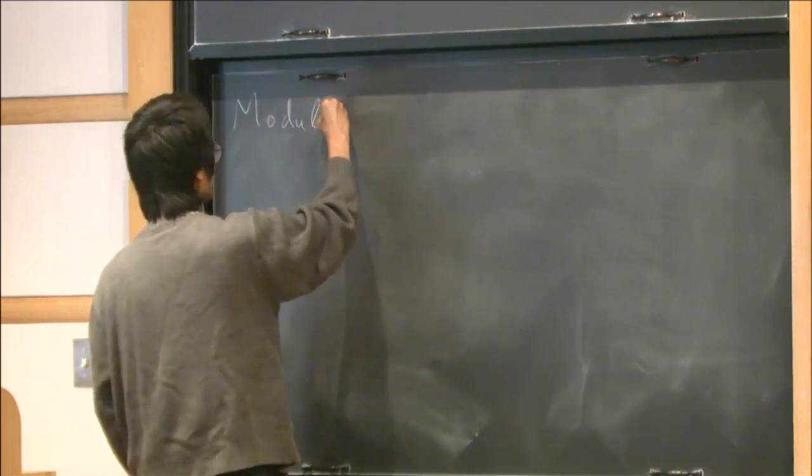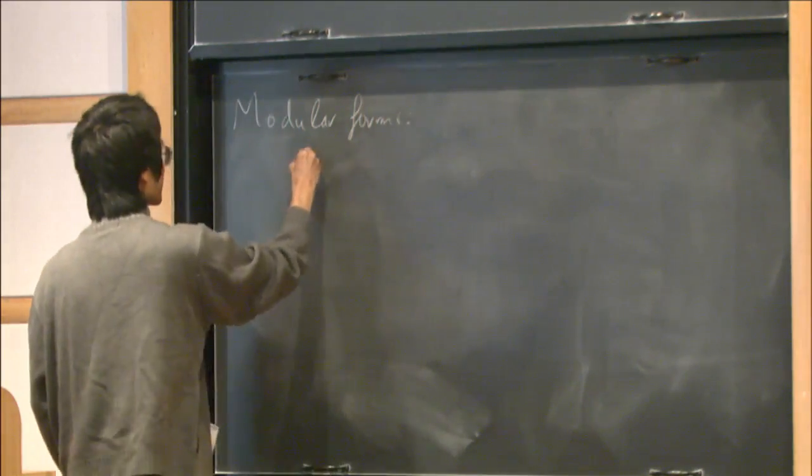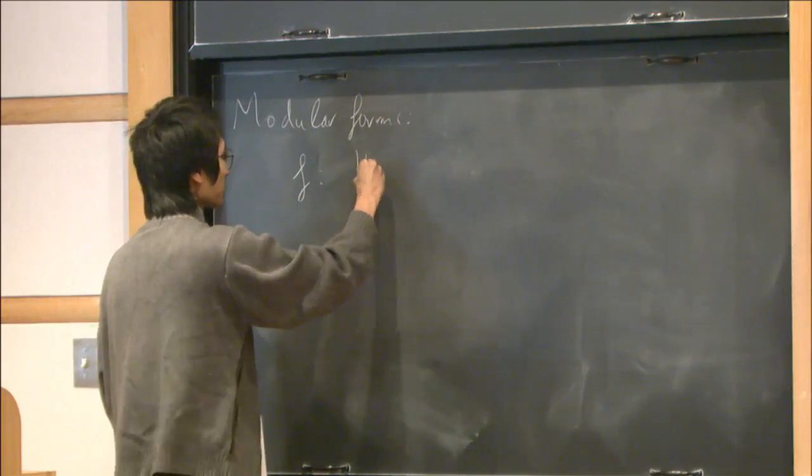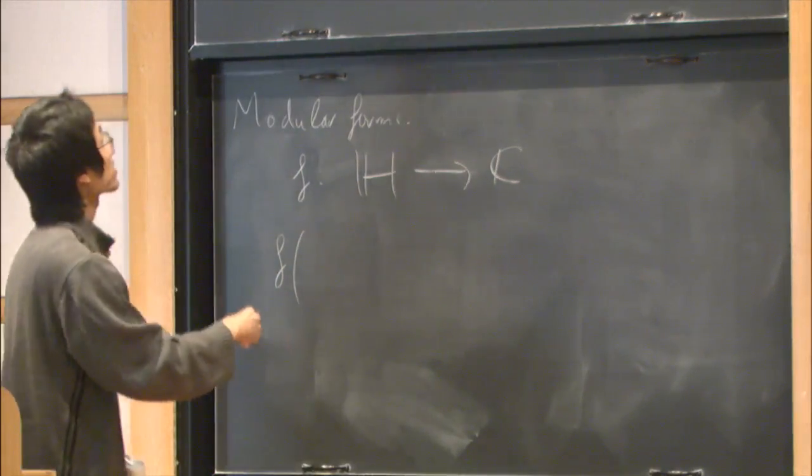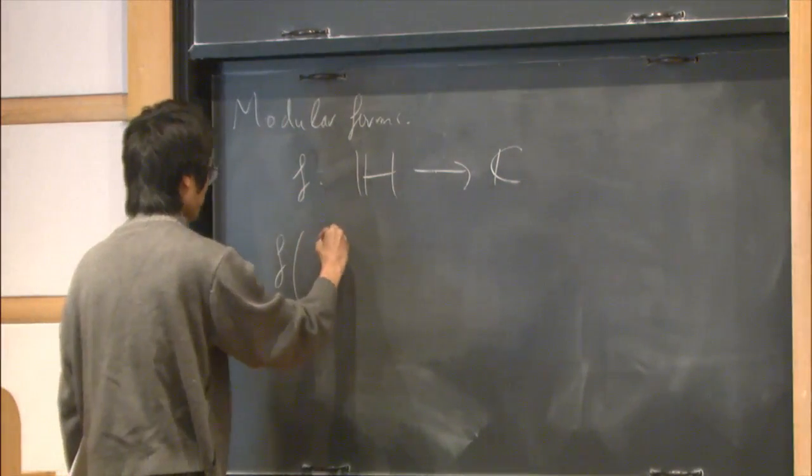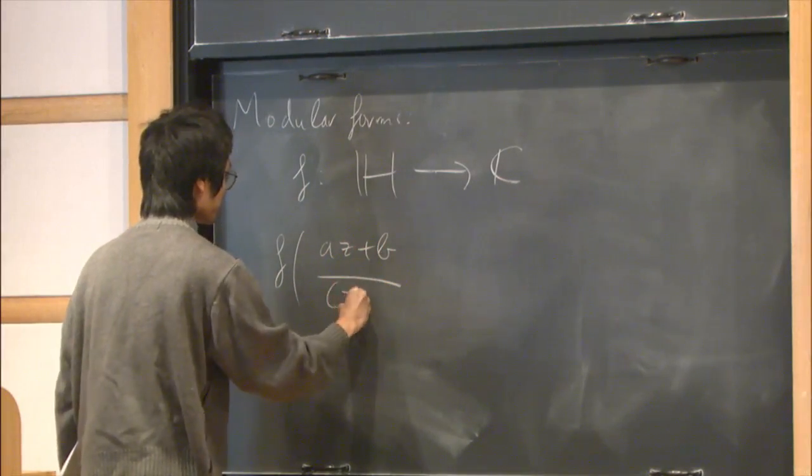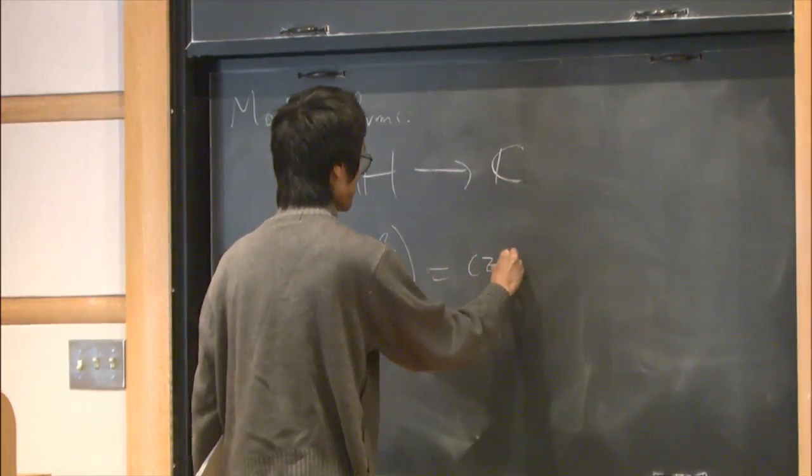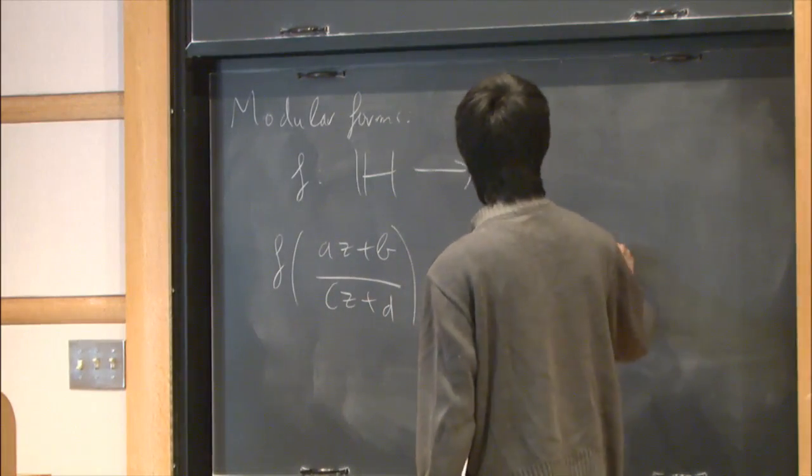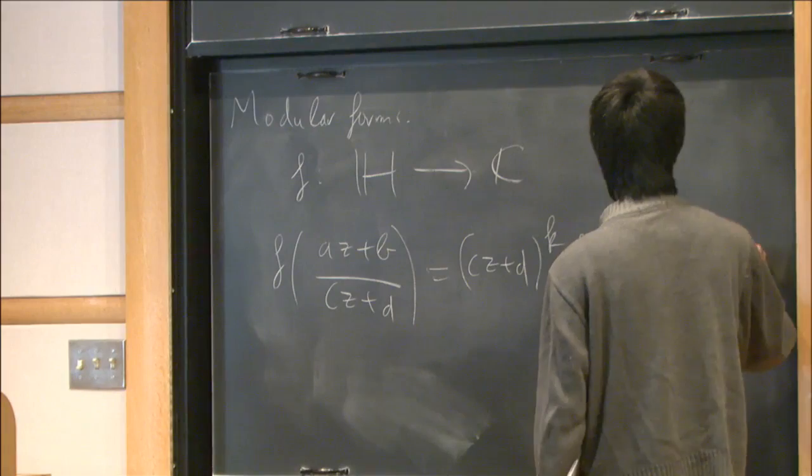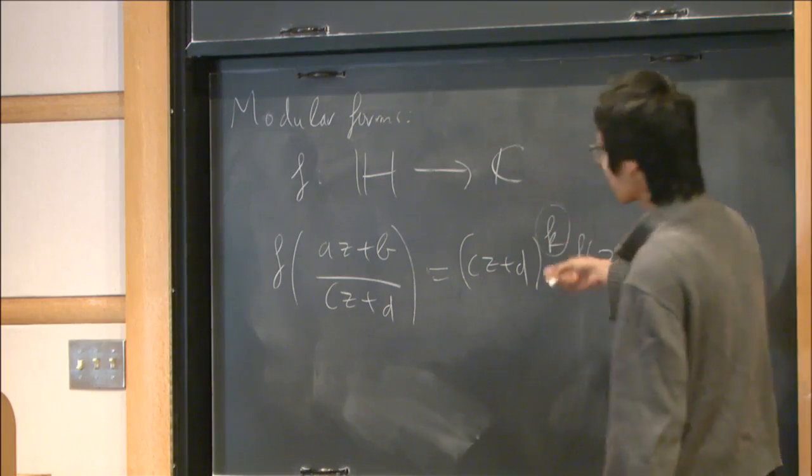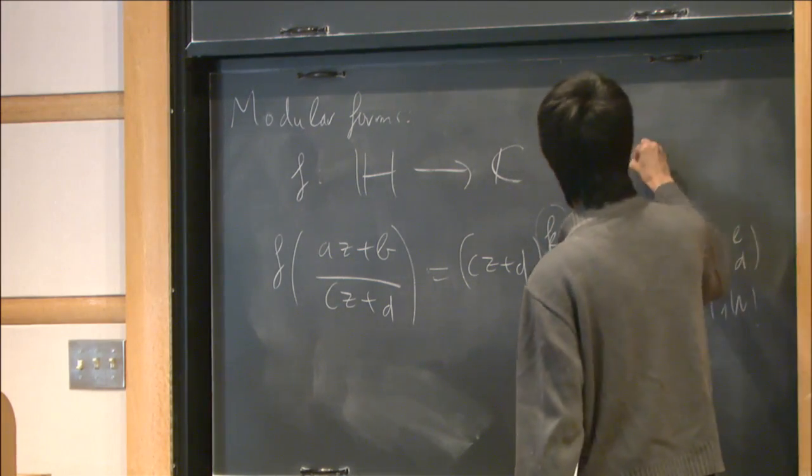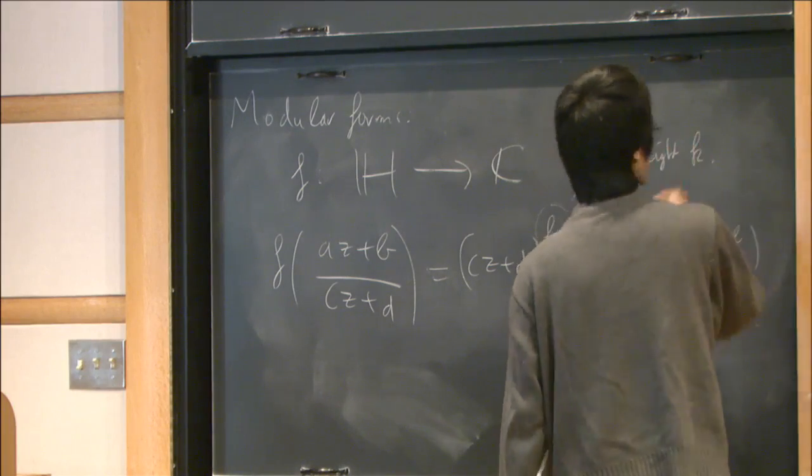Recall that modular form will be defined very analytically as holomorphic functions on the complex upper half plane which satisfy a certain symmetry condition under the action of this discrete group. So f(z) equals d to the chi of z for all a, b, c, d in one of these groups. The integer chi is an invariant for this function and that's called the weight.